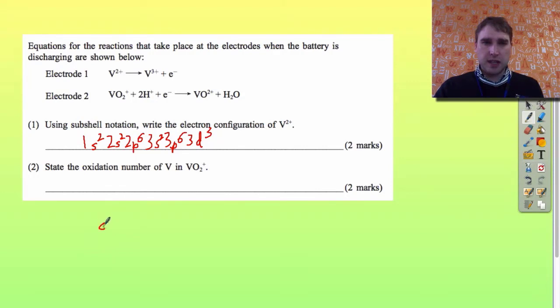So we've got x for vanadium plus 2 times the oxidation number of oxygen, which is -2 in most compounds. That's equal to the charge over here, which is +1. So we've got x - 4 = +1. Add 4 to both sides, I get +5. And the oxidation number is going to be equal to +5.